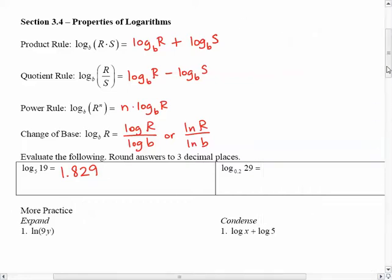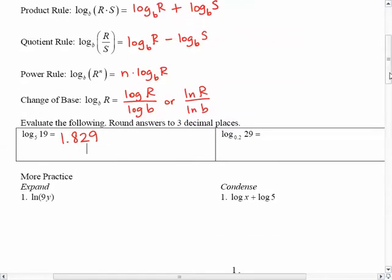So let's take a look at how we can use these properties to expand something like the ln of 9Y. Well, that just means that I can take the ln of 9 and the ln of Y and add them together. Can't simplify that anymore, but sometimes that's helpful.